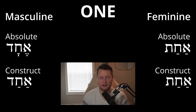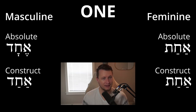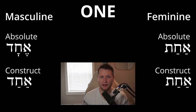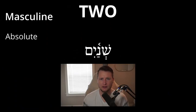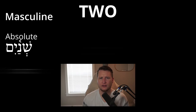This makes sense — we've seen before that feminine endings like to use Tav, not always, but it does like it. So it makes sense that we have Tav here with the feminine. Shenayim — two, masculine, absolute. Shenayim — two, masculine, construct.